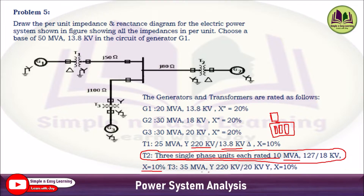Transformer T3: 35 MVA, star side voltage ratings are 220 kV and 20 kV, x = 10%. These are all the data given. You need to draw the per unit impedance and reactance diagram and find out the parameters.